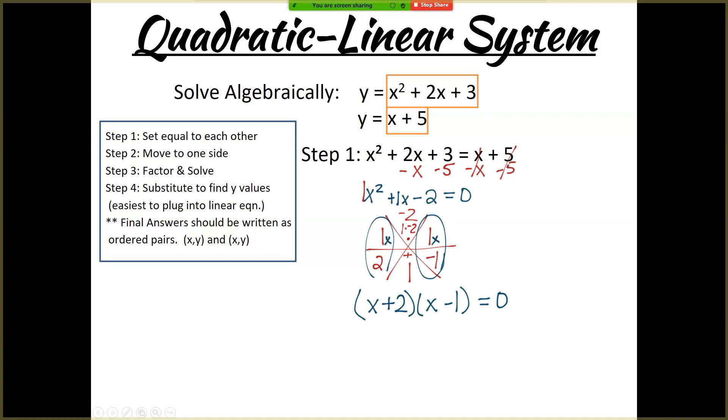Once we get here, we're going to use the zero product property, because these two sets of parentheses are being multiplied together to equal 0. One of those two has to be 0. So x plus 2 equals 0, or x minus 1 equals 0. I'm perfectly okay if you just jump to x equals negative 2, and x equals 1.